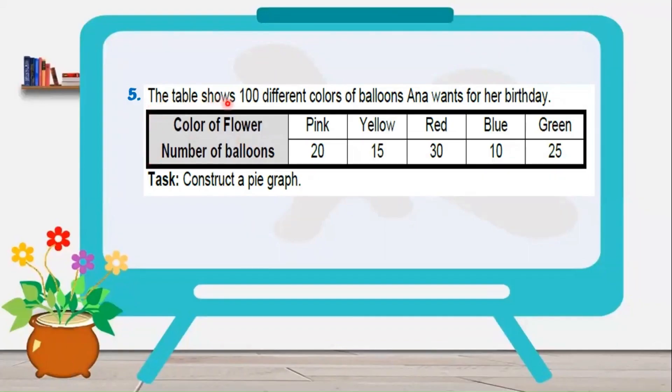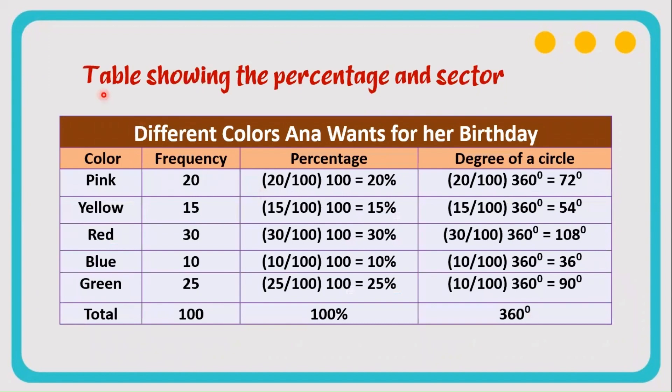Number 5. The table shows 100 different colors of balloons Anna wants for her birthday, so out of this data, we need to construct a pie graph. Remember that in making a pie graph, we need to have this data. We have the colors, the frequencies. As we look at the frequencies, the total is 100. It is not difficult to convert it to percentage because the percentage is equal to its number. As we can see here in our percentage column, we follow the formula, 20 divided by 100.